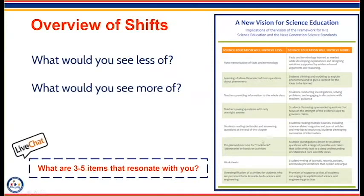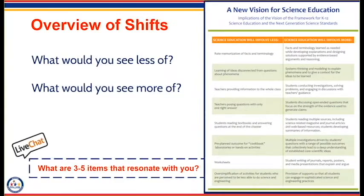This is an amazing document called 'A New Vision for Science Education.' It really talks about the shifts needed to switch from our performance objectives into what we now are calling content standards. On the left is what science education will involve less of, and on the right is what it will involve more of. Take a moment to read over this document and think about three to five items that resonate with you. Having students problem-solve and student-driven instruction are definitely key themes.